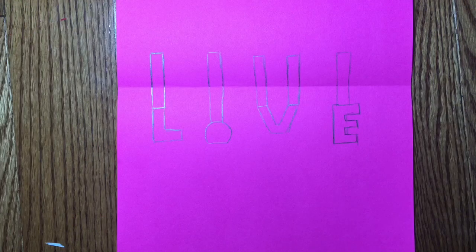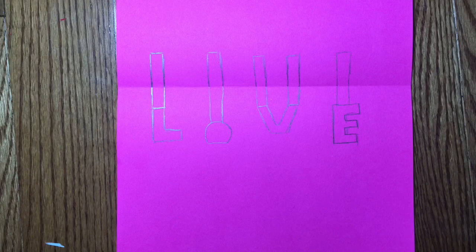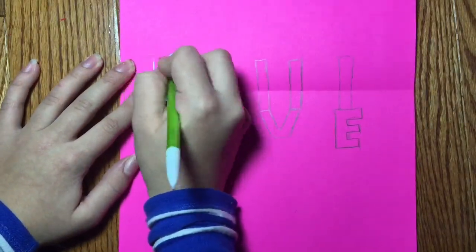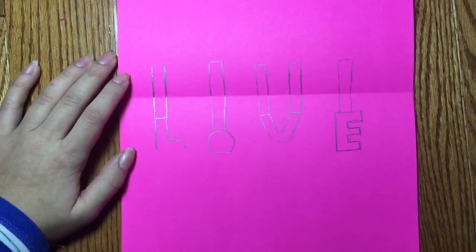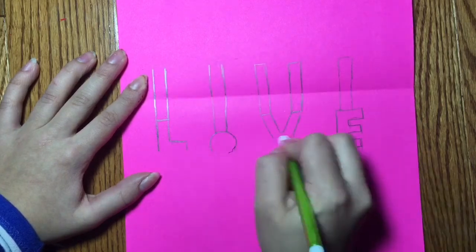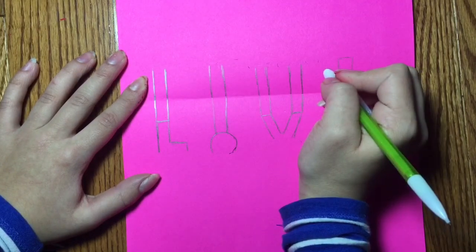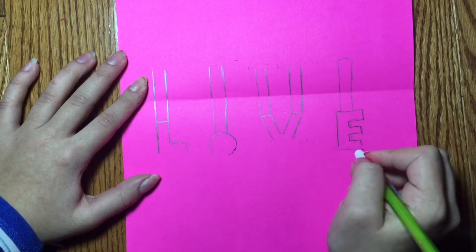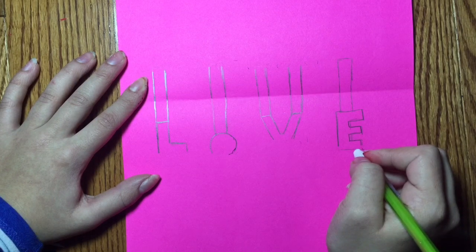This is how your final tracing should look like. Next, what I did was I erased the top and bottom lines of each letter or shape. I did this because you do not want to cut those areas. You want to cut the perimeter of the shape except for the top and bottom.